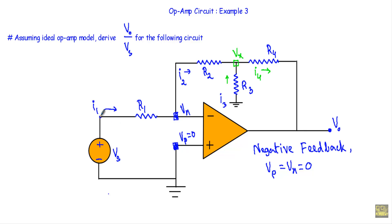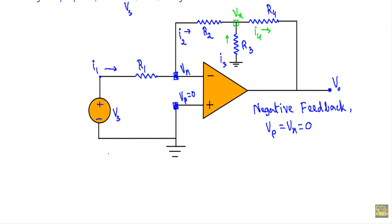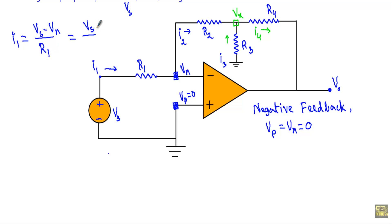Now the current I1 is flowing from the input terminal to this inverting terminal. I assume this terminal is at higher potential and the inverting terminal is at lower potential. So I can calculate I1 using Ohm's law: I1 equals Vs minus Vn divided by R1. Since Vn equals zero, I get I1 equals Vs divided by R1.